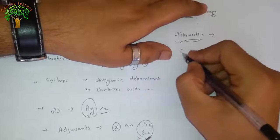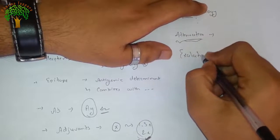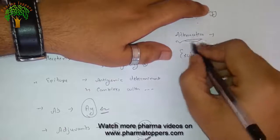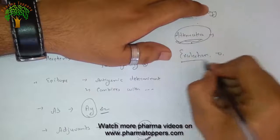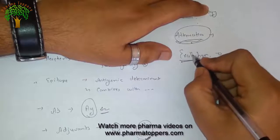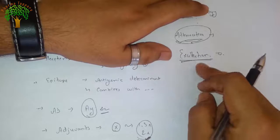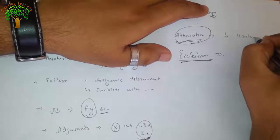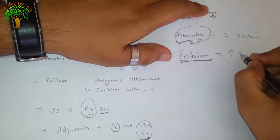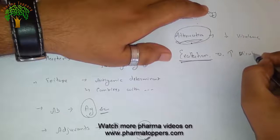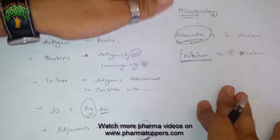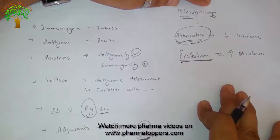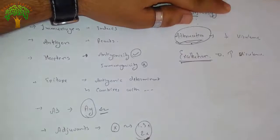Next is exaltation. It is the complete reverse process of attenuation — in attenuation we reduce the virulence, whereas in exaltation we exaggerate the virulence. This covers all the common terminologies used in microbiology. Thank you — please subscribe to the Pharma Toppers.